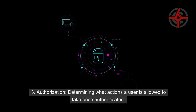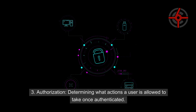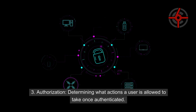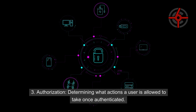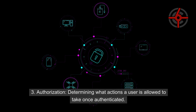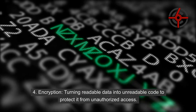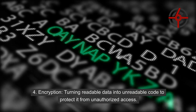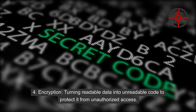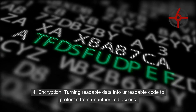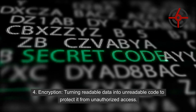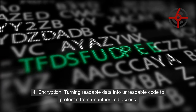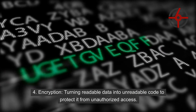3. Authorization: Determining what actions a user is allowed to take once authenticated. 4. Encryption: Turning readable data into unreadable code to protect it from unauthorized access.